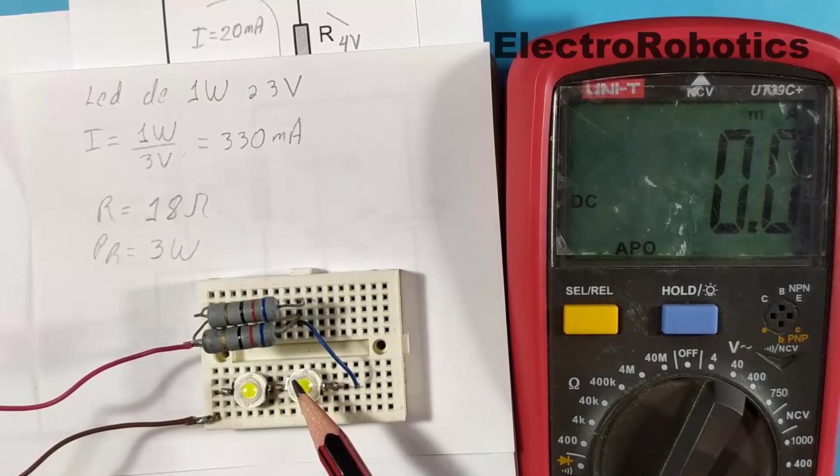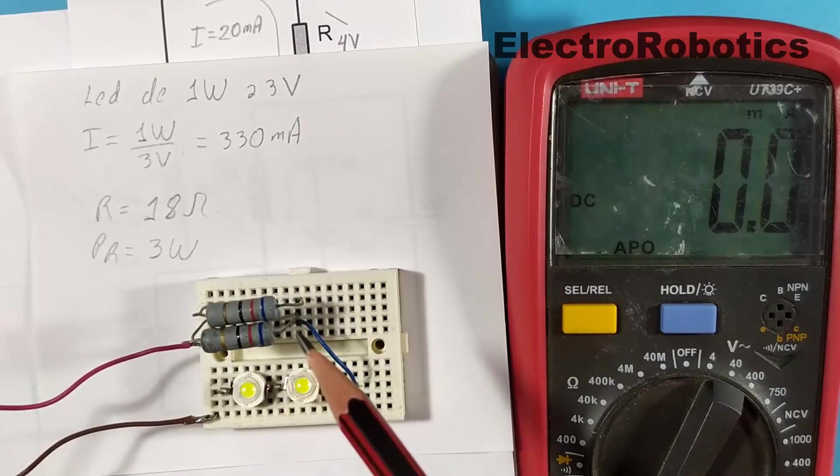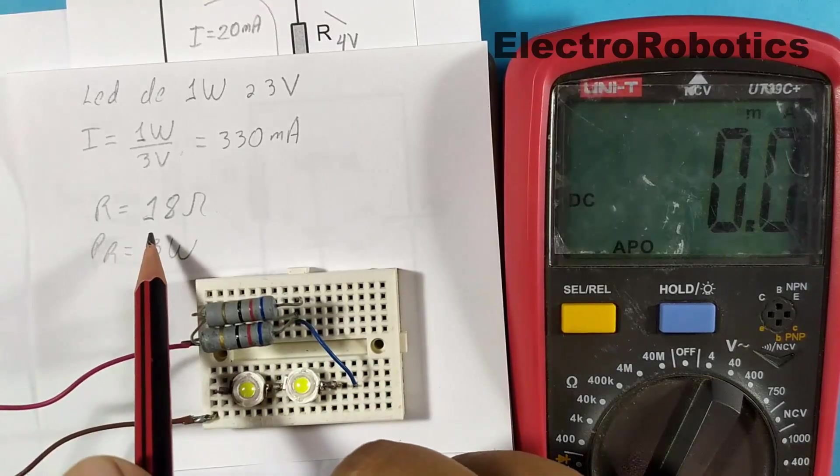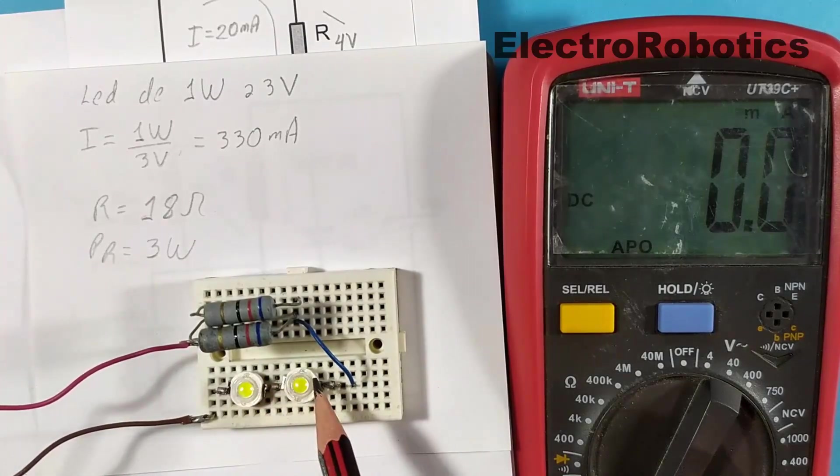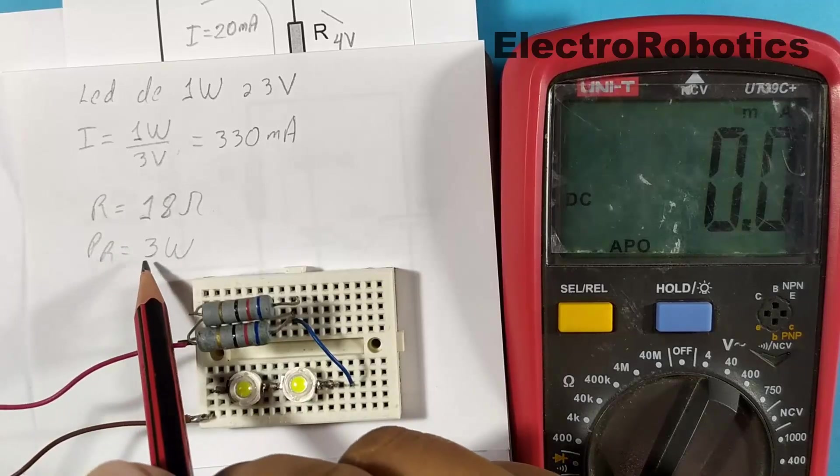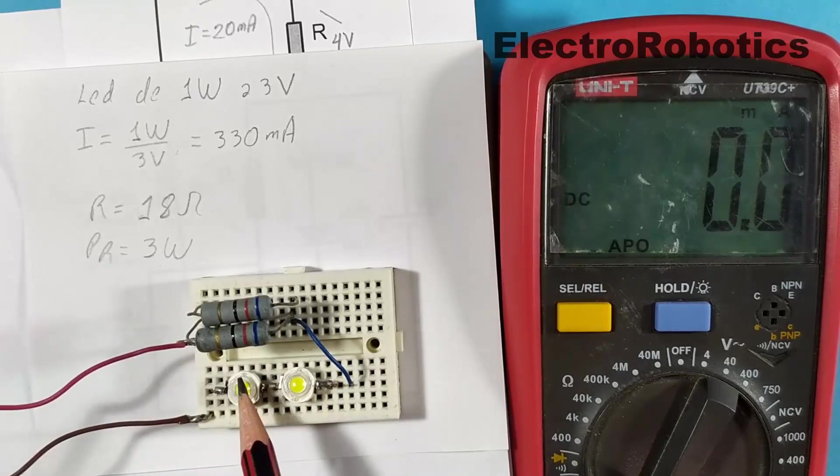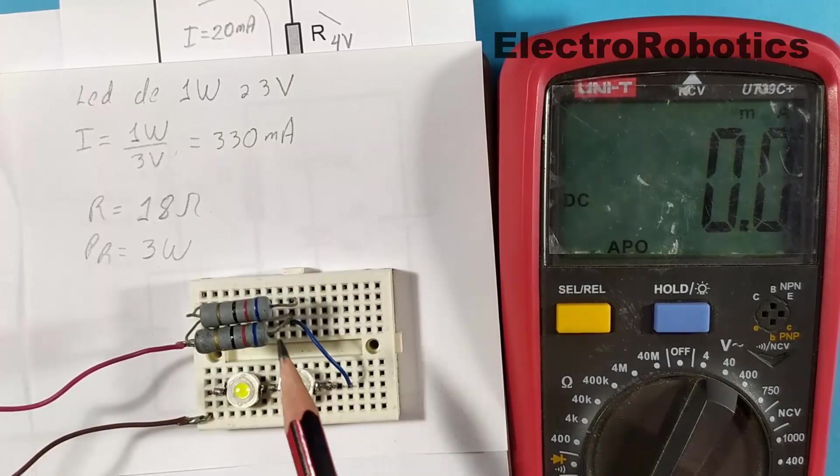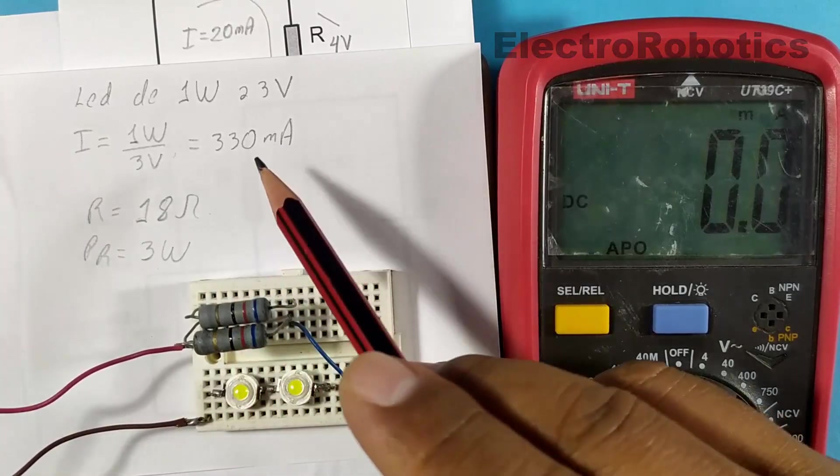So in this situation, we cannot give them the maximum current. We are going to give them a little less, and in the case of resistance, the resistance will depend on how many LEDs we put in series. If I put 4 LEDs in series, it would be more convenient because the resistance would be of less power. As you can see here, it says that it has to be 3 watts. When I use two 3 volt LED diodes, which would be 6 volts, the rest of the 6 volts would remain in the resistance. And this would have to limit the current to 330 milliamps.